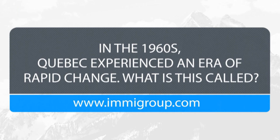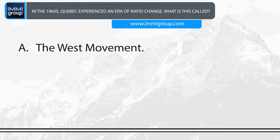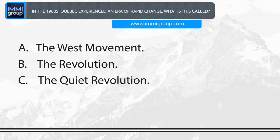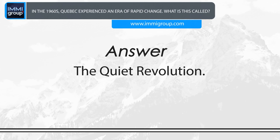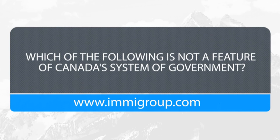In the 1960s, Quebec experienced an era of rapid change. What is this called? A. The West Movement. B. The Revolution. C. The Quiet Revolution. D. La Francophonie. Answer: The Quiet Revolution.